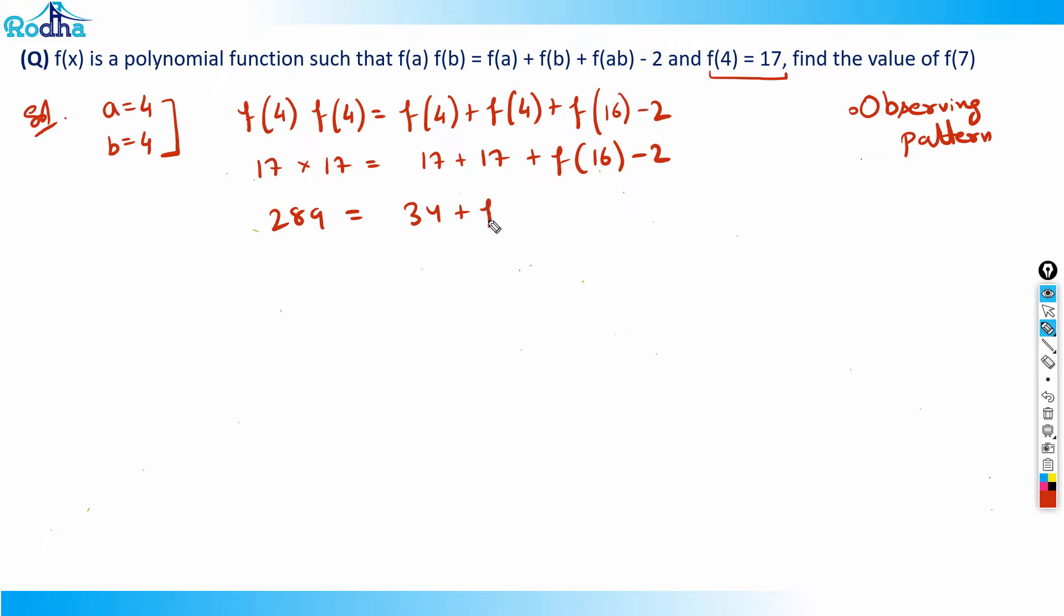If I solve it, I get f(16) = 289 - 34 - 2 = 257. Now we have two values. Are these two values good enough to observe the pattern?